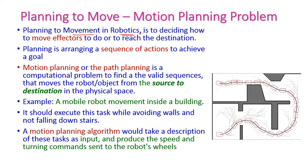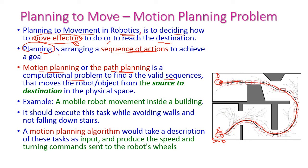Planning to move in robotics means deciding how to move the effectors of the robot to reach the destination. Initially the robot is at the source and needs to reach the destination. First it needs to find the path and know how to move along it. A sequence of actions is planned to achieve the goal. Motion planning is a computational problem to find the valid sequence of actions the robot needs to perform to reach the destination.